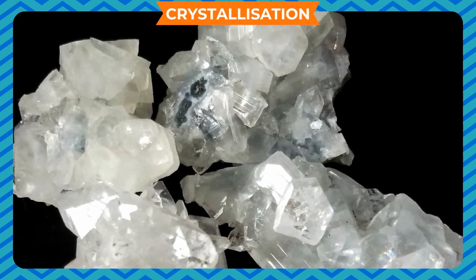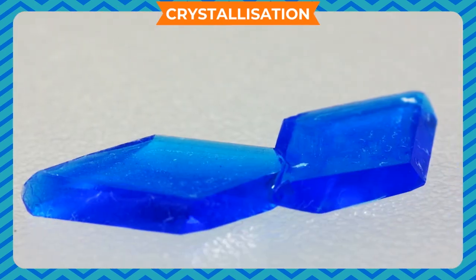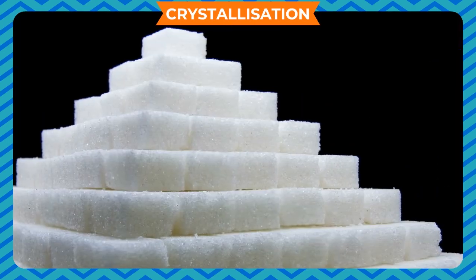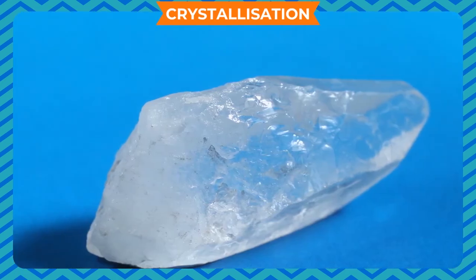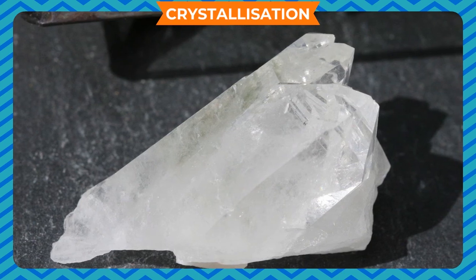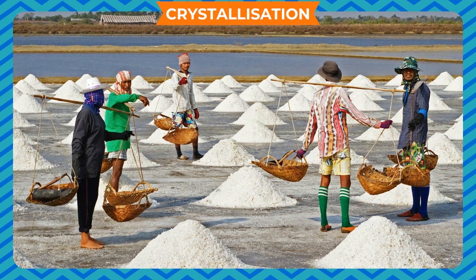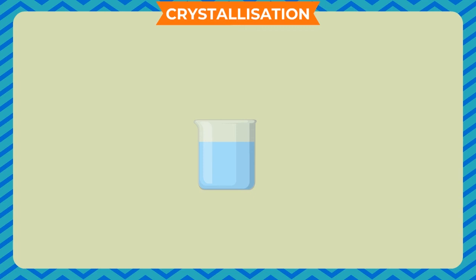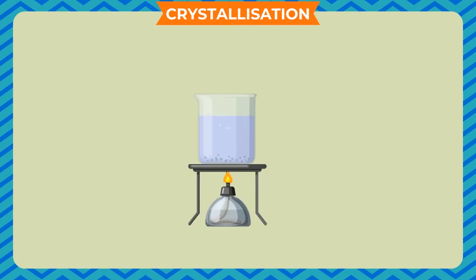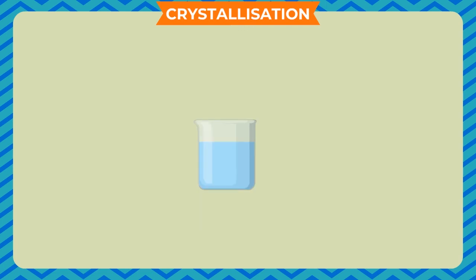Crystallization: the process of separating a pure substance in the form of crystals from a hot saturated solution by cooling is called crystallization. This method is used to purify solid substances. Normal table salt can be obtained by evaporation of seawater. To make pure crystals of copper sulfate: take some water in a beaker and add a teaspoonful of copper sulfate. Stir the solution until it cannot dissolve more salt. Heat it and add more copper sulfate, stirring continuously until no more salt dissolves — this is a supersaturated solution of copper sulfate. Allow the solution to cool at room temperature without disturbing it. Observe after a few hours — you will get crystals of copper sulfate.